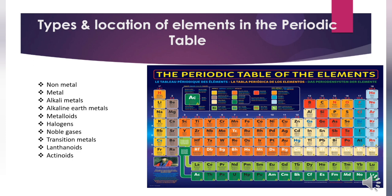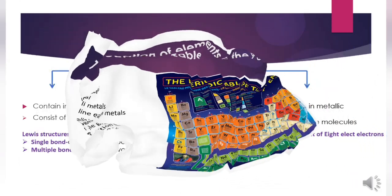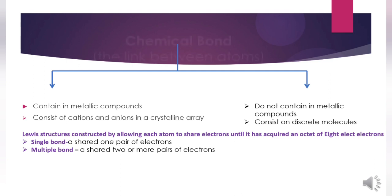The two classes of substance meet at a diagonal line running from boron to polonium, which constitutes the metalloids, with properties intermediate between those of metals and non-metals. Group 17 is named halogens and group 18 is called the noble gases. The members of the D-block, especially groups 3 to 11, are known as transition metals. Those of the F-block are sometimes called the inner transition metals, which consist of the lanthanoids and actinoids.